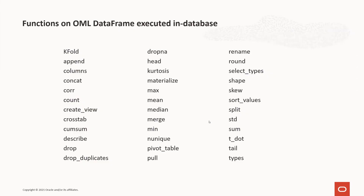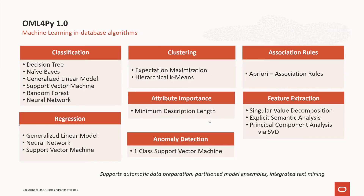In its first release, OML4Py provides overloaded functions that operate on OML DataFrame proxy objects — many powerful functions are available. With respect to machine learning algorithms, OML4Py provides a natural Python API to the in-database algorithms, supporting classification, regression, clustering, attribute importance, anomaly detection, association rules, and feature extraction. The in-database algorithms naturally support automatic data preparation, partitioned model ensembles, and integrated text mining. Users can extend this set of algorithms with those provided in Python's scikit-learn package. In-database models produced through the Python API can also be accessed using the SQL API.